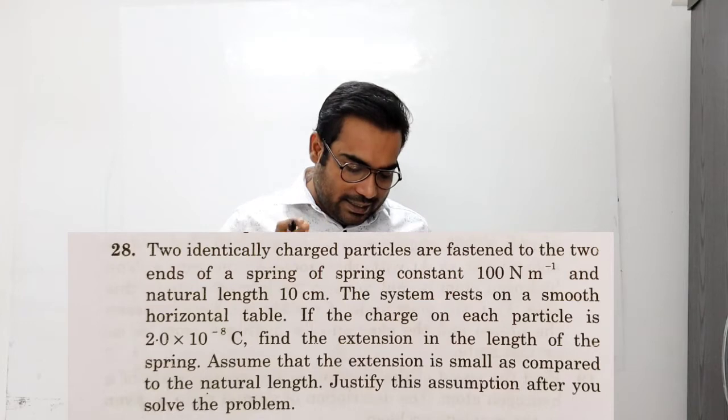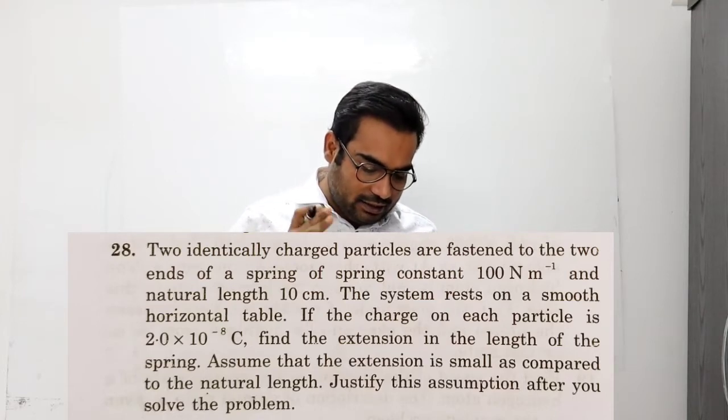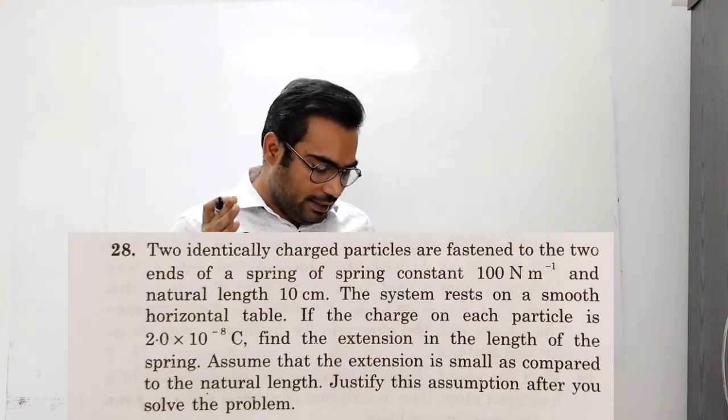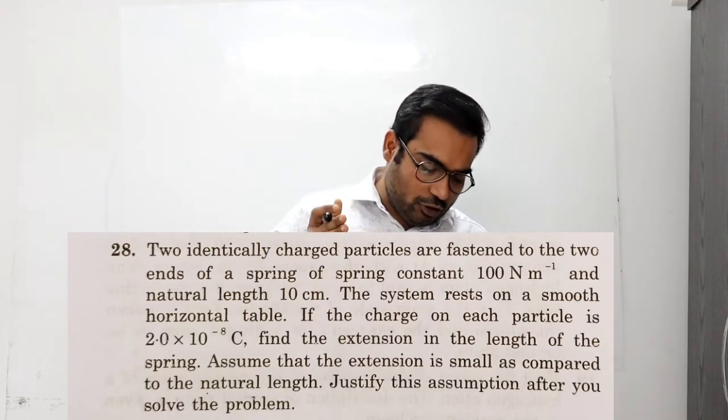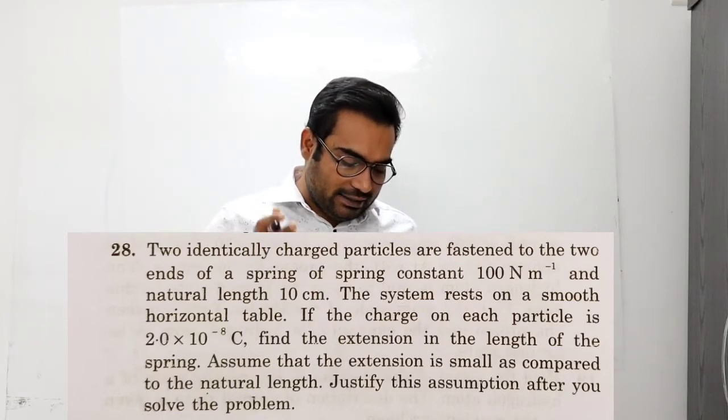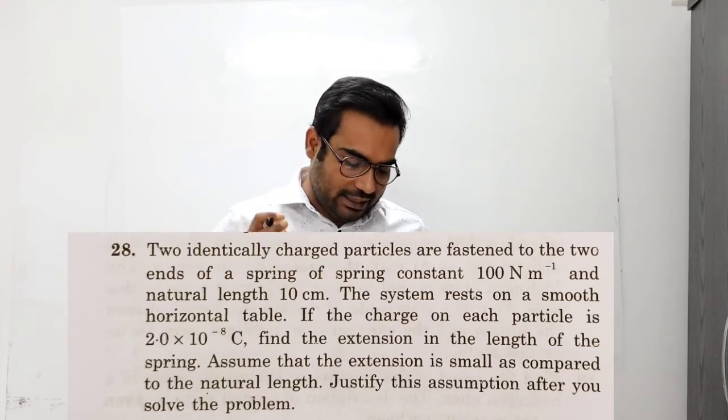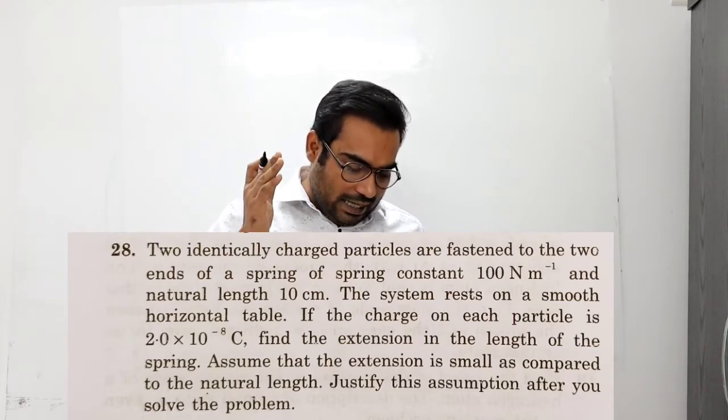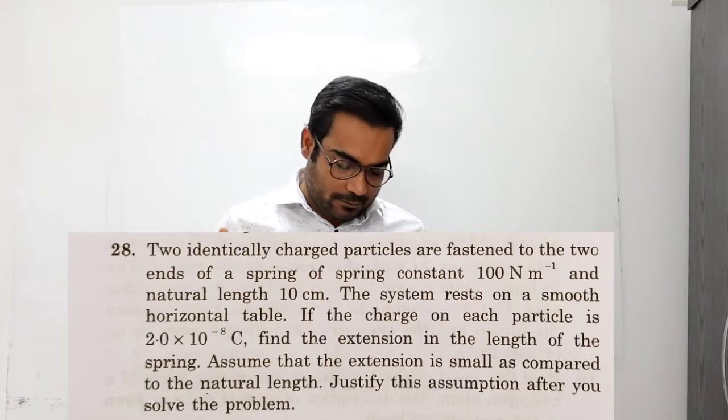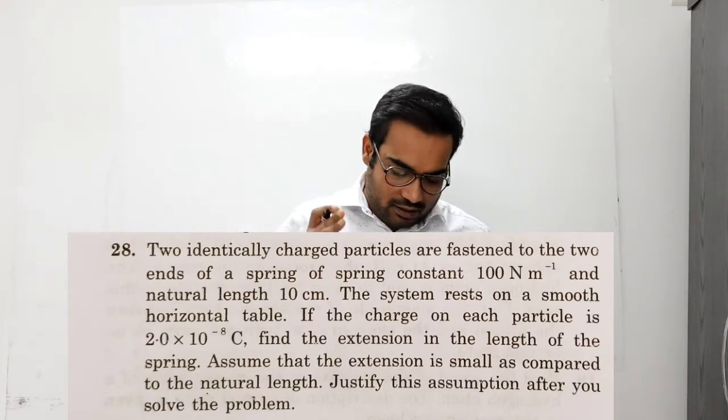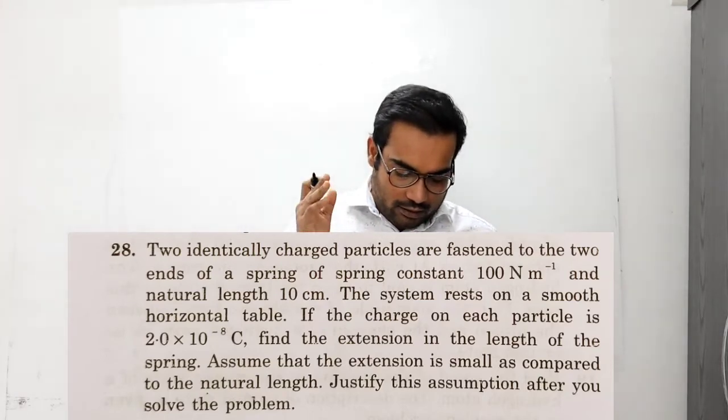The system rests on a smooth horizontal table. If the charge on each particle is 2 into 10 to the power minus 8 C, find the extension in the length of spring. Assume that extension is small as compared to the natural length. Justify this assumption after you solve the problem.